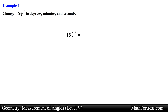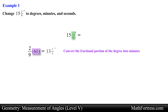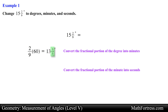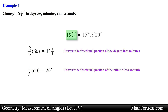Similar to the previous problems, we want to convert the fractional portion of the degree into minutes, so we take the fraction and multiply it by 60, giving us 13 and a third minutes. Since we have a fractional portion of a minute, we convert this fraction into seconds by multiplying by 60 once more. So 15 and 2/9 degrees can be written as 15 degrees 13 minutes 20 seconds, and this is our final answer.